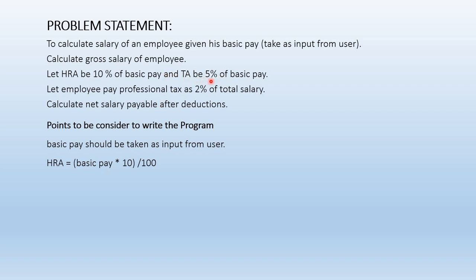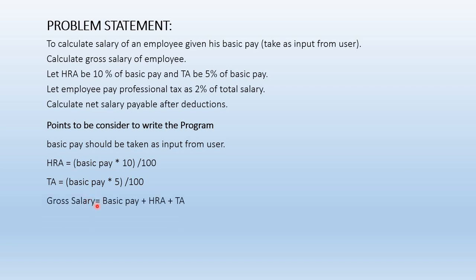Then we need to calculate TA, which is 5 percent, so the formula is: TA = basic_pay * 5 / 100, which calculates 5 percent of basic pay. After TA and HRA, we calculate gross salary: gross_salary = basic_pay + HRA + TA. This gives us our gross salary.